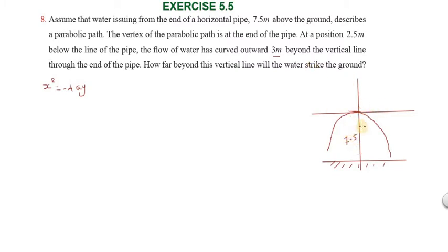At a position 2.5 meters below the line of the pipe, in the total height of 7.5 meters, 2.5 will be measured. At 3 meters distance from the vertical line, the height is 2.5. So we have the point where distance is 3 meters and height is 2.5 meters.